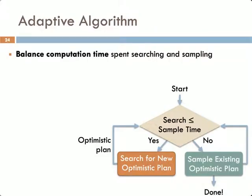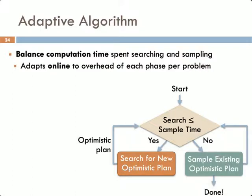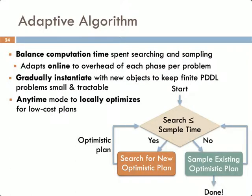This motivated the development of our final PDDLStream algorithm, the adaptive algorithm, which balances the computation time spent searching and sampling in order to ensure that sampling receives the same amount of effort as searching. This algorithm is also able to adapt online to the inherent overhead of each phase, and can be run in anytime mode to locally optimize for low-cost plans.